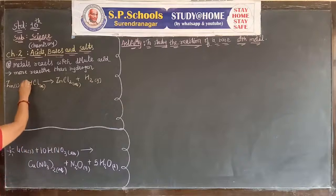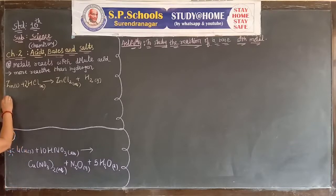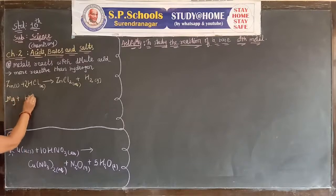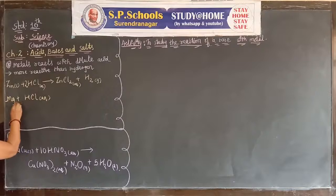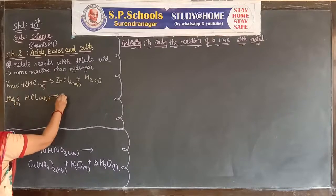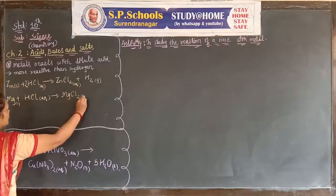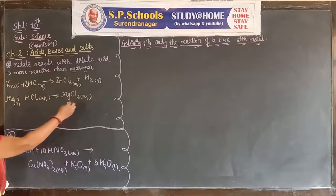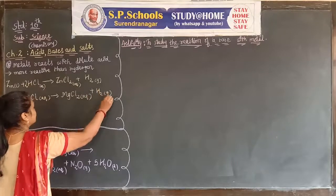To balance the equation, we put 2 before HCl. Let's take another metal, which is Mg. When Mg reacts with HCl, it forms MgCl₂ and H₂ gas is evolved.